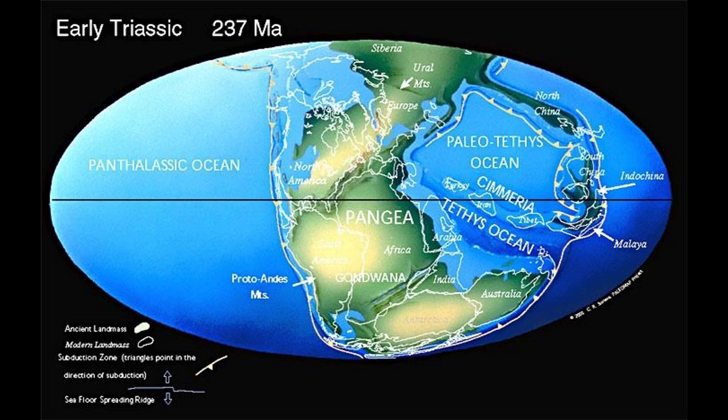The supercontinent of Pangaea, mostly assembled by the Triassic, allowed land animals to migrate from the South Pole to the North Pole. Life began to re-diversify after the great Permo-Triassic extinction and warm-water faunas spread across Tethys.